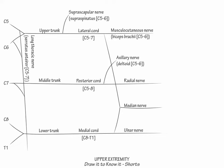This is part two of upper extremity innervation. Here we will learn a few notable muscles that the radial, median, and ulnar nerves innervate. Begin with the radial nerve.